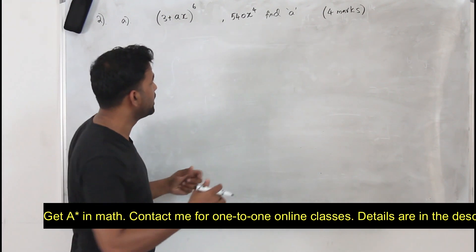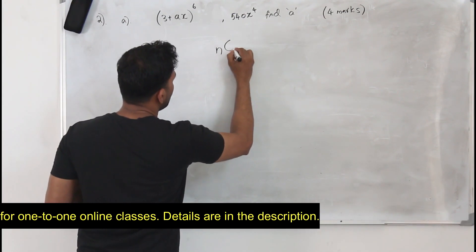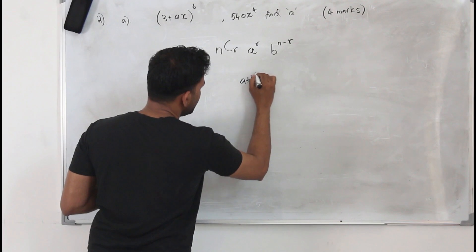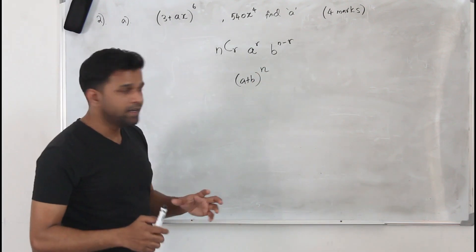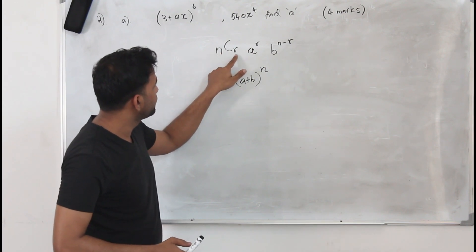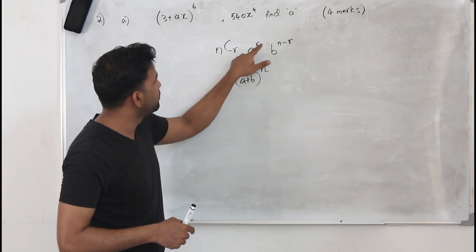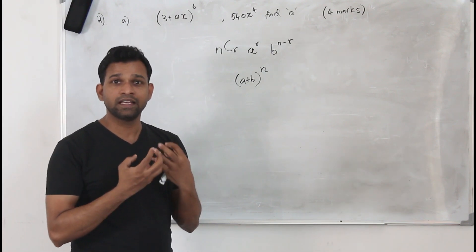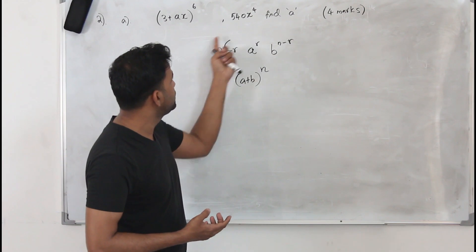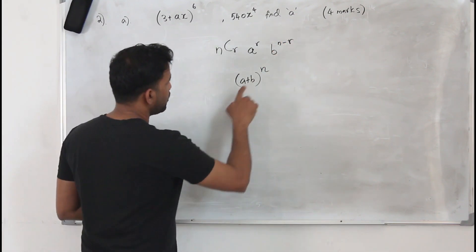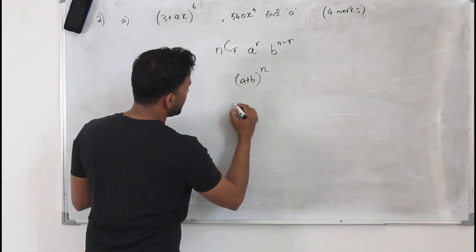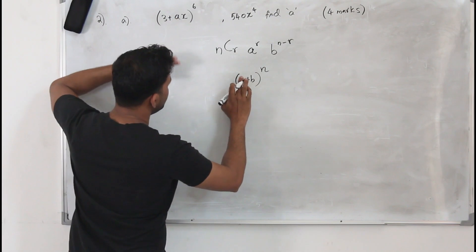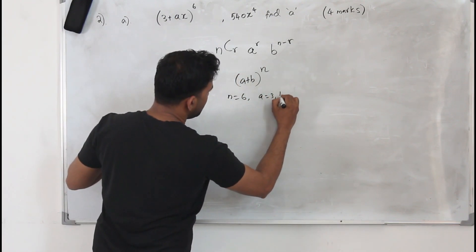Whenever you are given this, you must know the nth term formula for the binomial function. The formula is nCr × a^r × b^(n-r), when you have (a + b)^n. Any term will be in the form nCr × a^r × b^(n-r). Here our n is 6, and a is 3 — a is the first term. Don't get confused: here a is the first term and b is the second term.